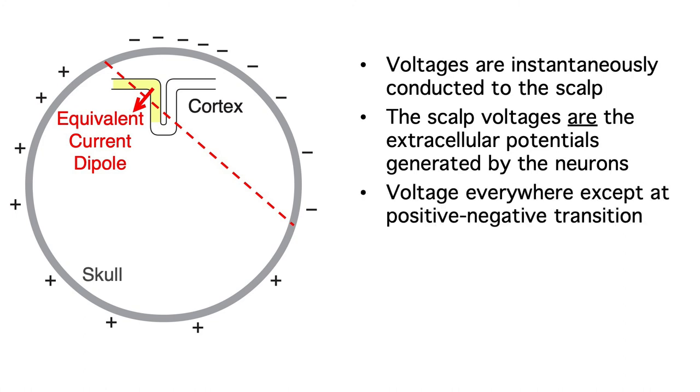A third point is that a given ERP is negative on one side of the head and positive on the other side, with voltage everywhere except at the negative to positive transition.